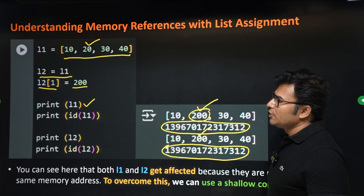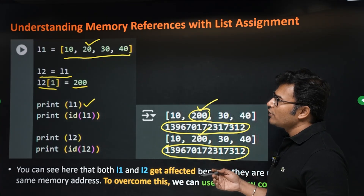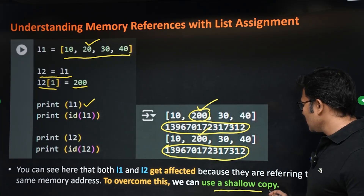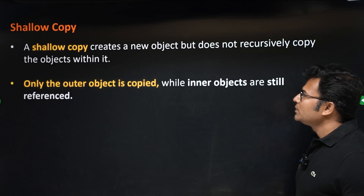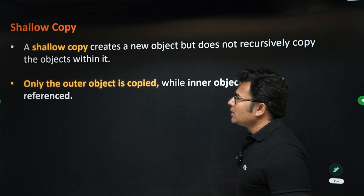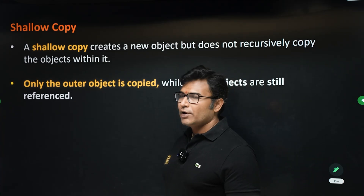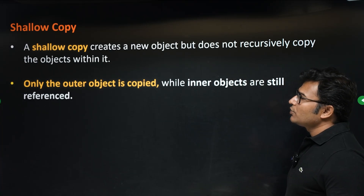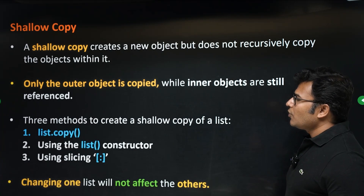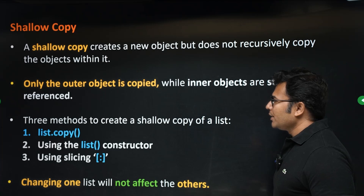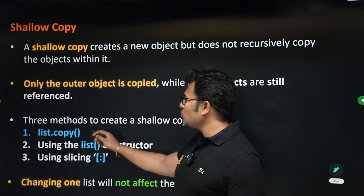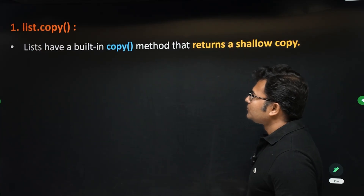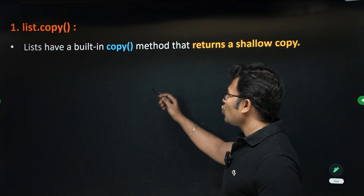How do you create a different object? If you don't want the same object to be modified, you use something called shallow copy. Shallow copy creates a new object for the new list. The various ways to create a shallow copy are: list.copy(), the list constructor, and slicing.